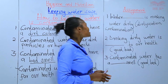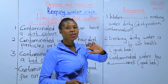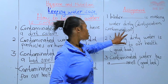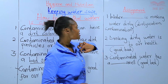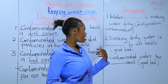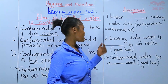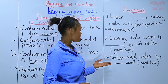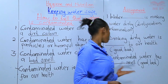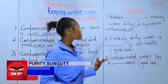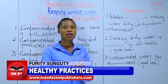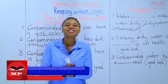Assignment: Number one — water blank is making water dirty. The answers are in the brackets; choose the correct answer and fill in the blank space. Question two — drinking dirty water is blank to our health: good or bad? Write the answer in the blank space. Lastly — contaminated water has a blank smell: good or bad? Write the correct answer in the blank spaces. Make sure you go through the work after you have answered it. Hope to see you in the next lesson.